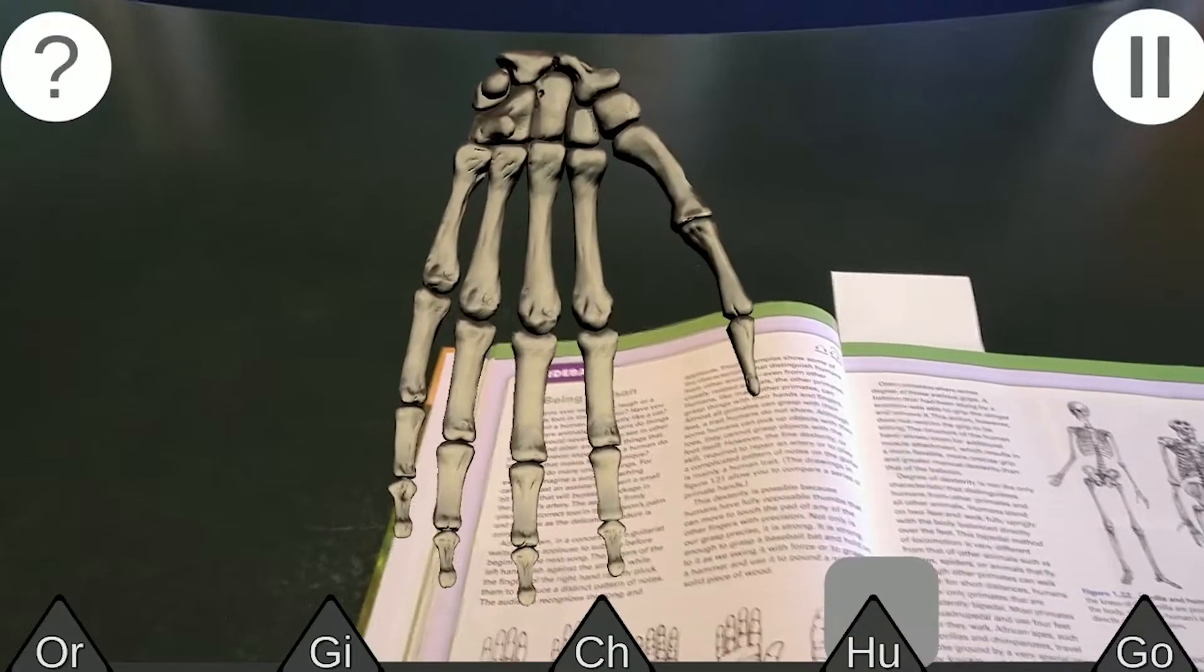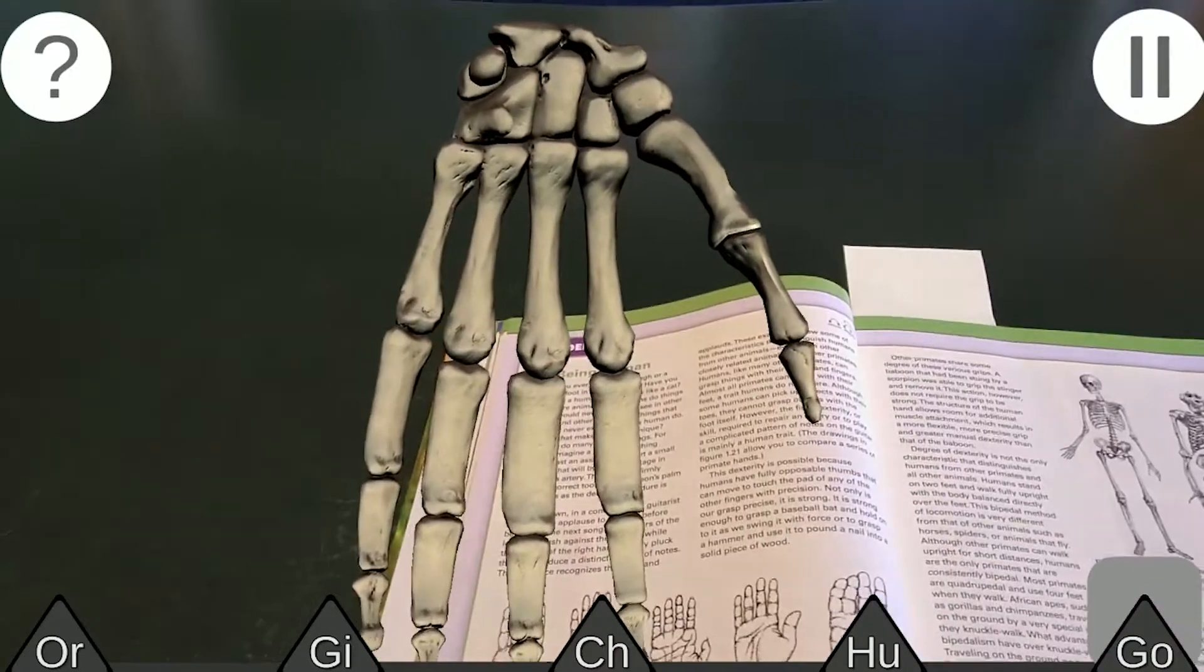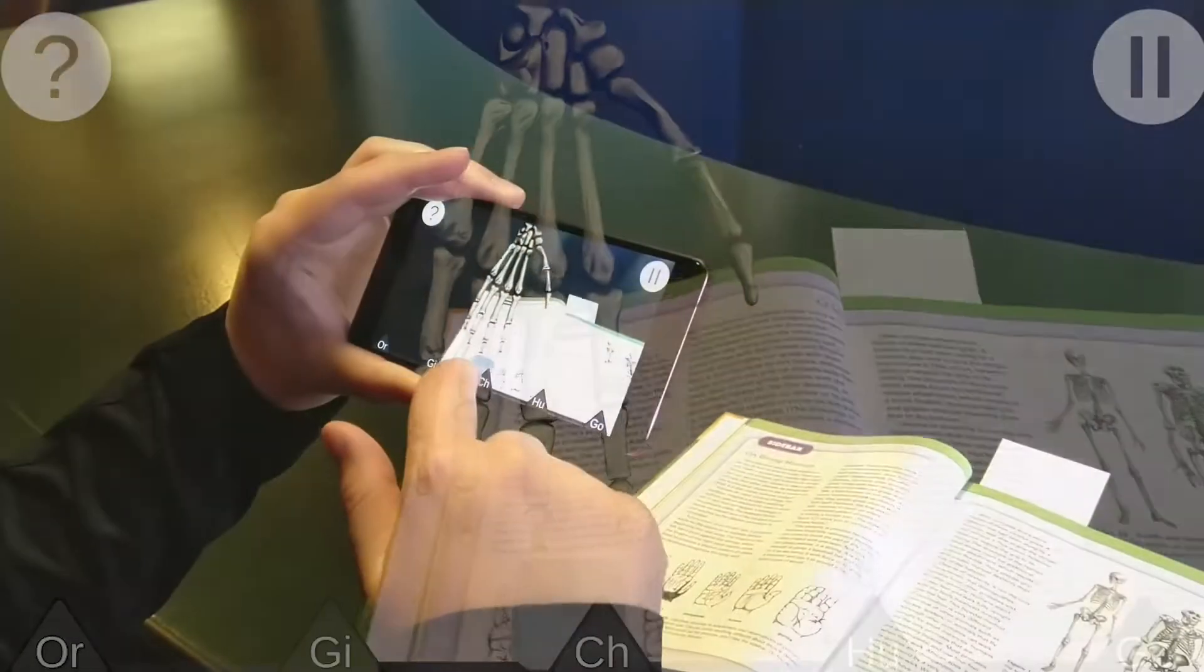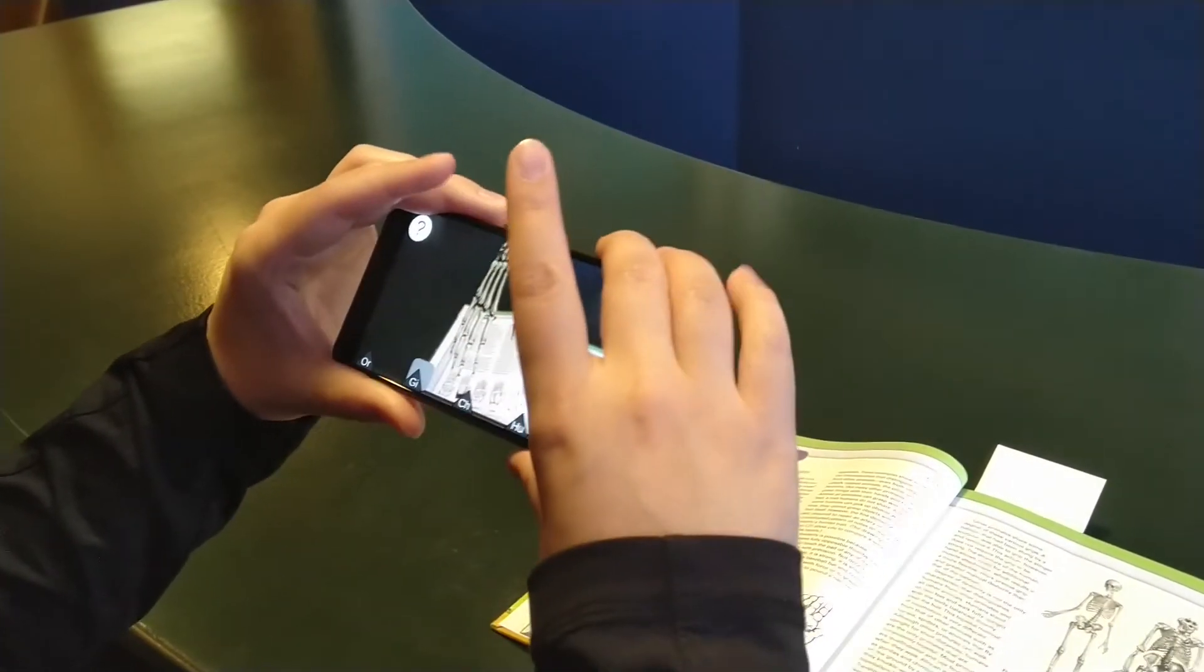The gibbon's much longer thumb would allow a more prehensile grip on the chicken noodle soup. Now consider, which hand appears to be the strongest?